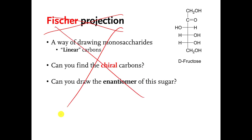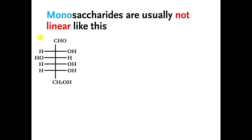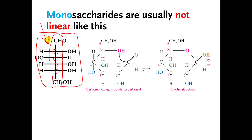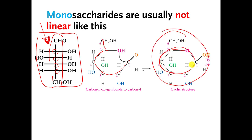You can ignore all of this. Here is what I'm calling a Fischer projection — just a way of drawing the molecules where the carbons are arranged in a straight line. Most of the time, monosaccharides are not like this. Most of the time, the carbons wrap around. See how the carbons are wrapping around now? And then they wrap around and connect to each other.